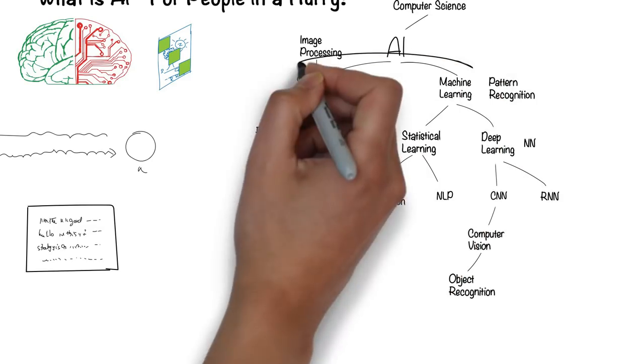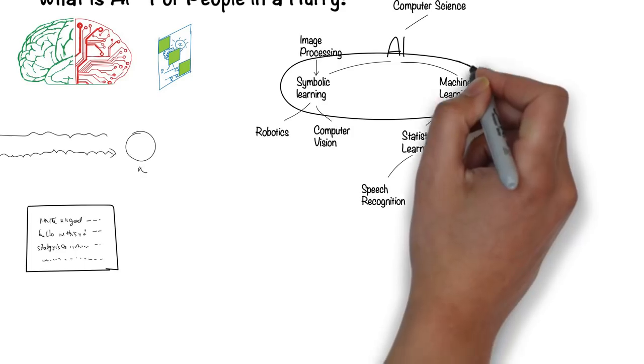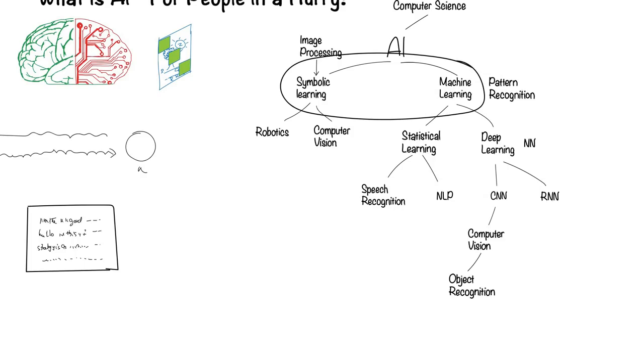As you see, there are two ways AI works. One is symbolic-based, and another is data-based.